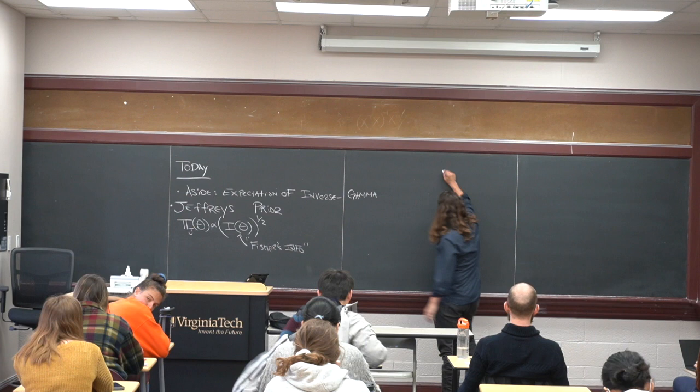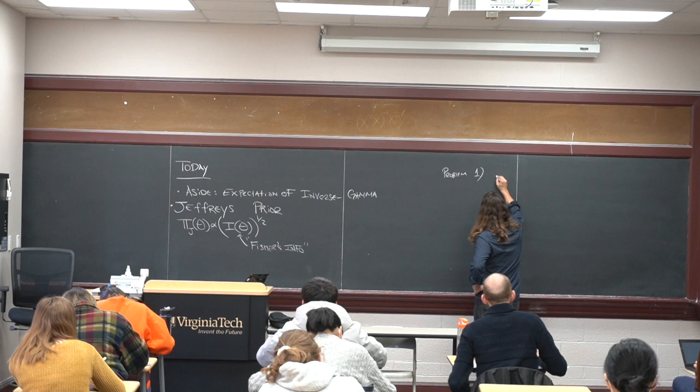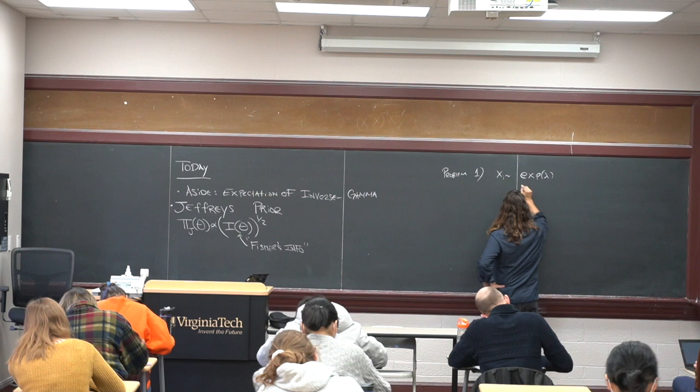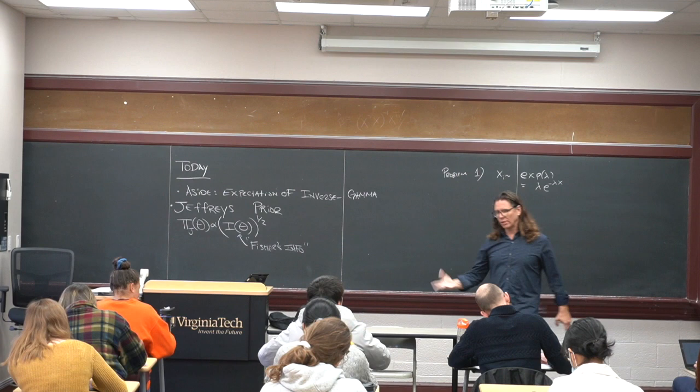So problem one — there are a few issues right here that I've seen in my early attempt at grading. It says something like x_i's are exponentially distributed. And exponentials look something like this: lambda e to the minus lambda x. That's one parameterization of it.